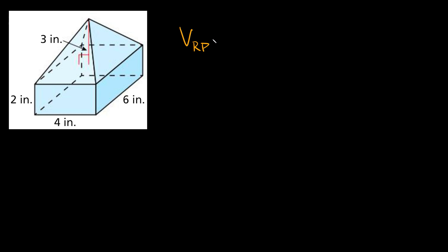In order to find the total volume of this solid, we first need to find the volume of this rectangular prism down here, and then we need to find the volume of the pyramid up here and then just add them together. So in order to find the volume of this rectangular prism, you want to use this formula right here. The volume of a rectangular prism — basically the volume of anything that looks like a box — is just equal to the length times the width times the height.